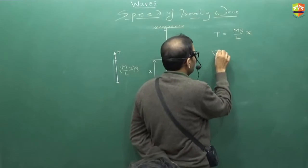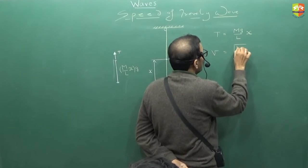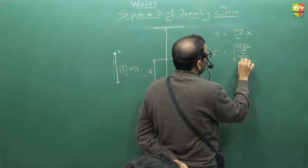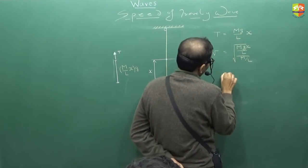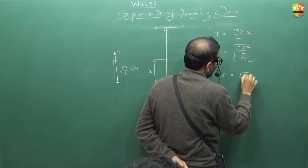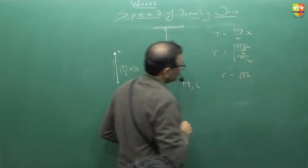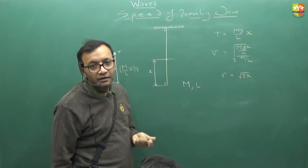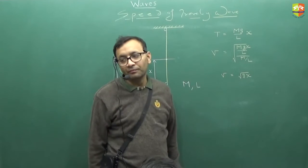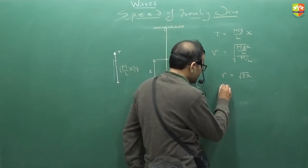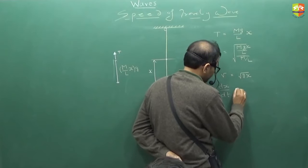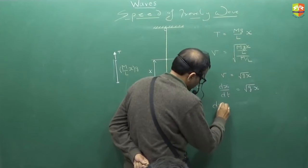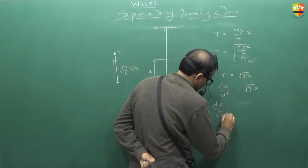So the velocity is under root of T by mu. T is mgx by l divided by mu is m by l. So the velocity of the wave comes out to be root over gx. Yes or no? Velocity of the wave depends on where you are finding it. Because tension is not uniform.